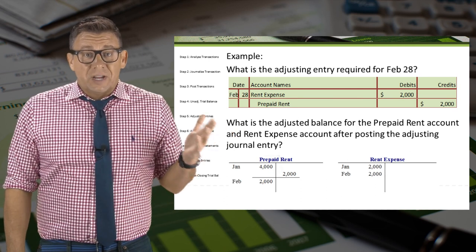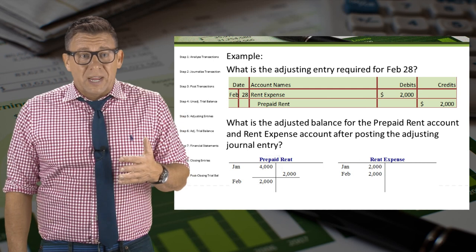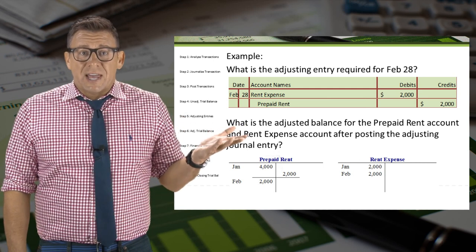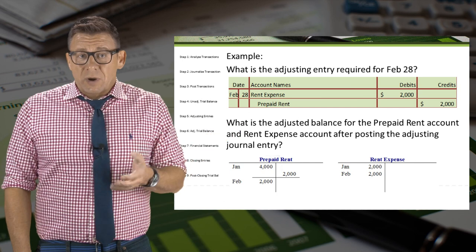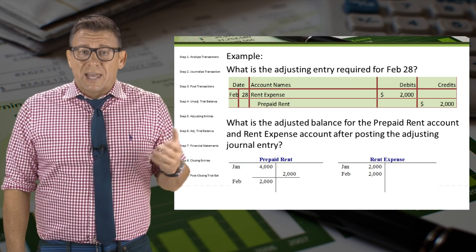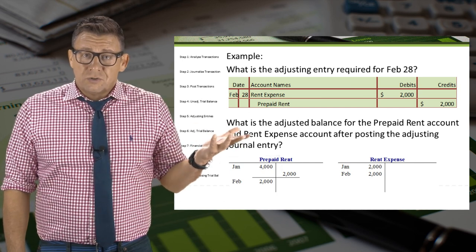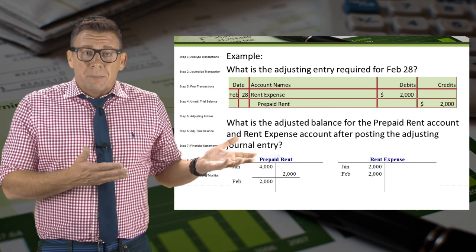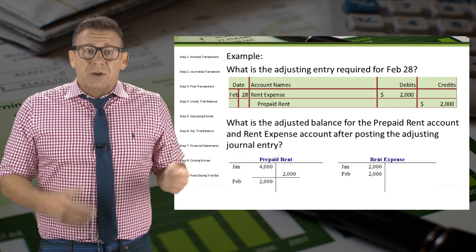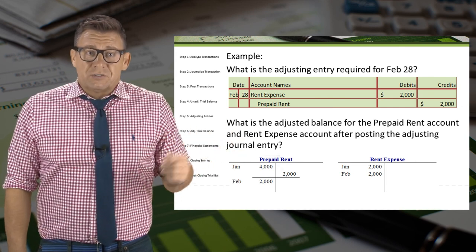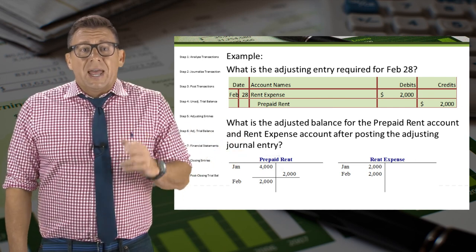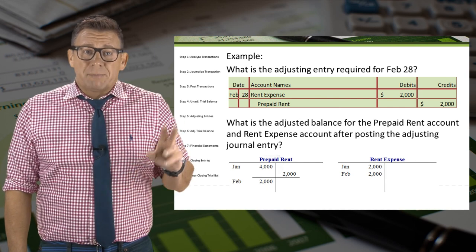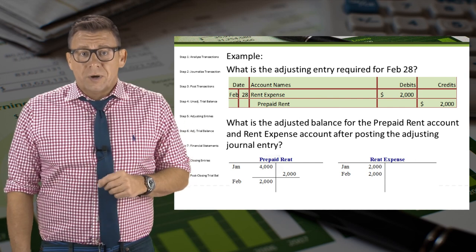The adjusting entry on February 28 isn't any different. It's a debit to the expense account, rent expense, and a credit to the asset account, prepaid rent, for $2,000. Looking at the balances, prepaid rent has an adjusted balance of $2,000, and rent expense has a balance of $2,000 for February.